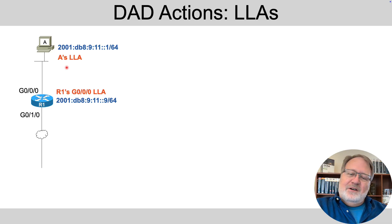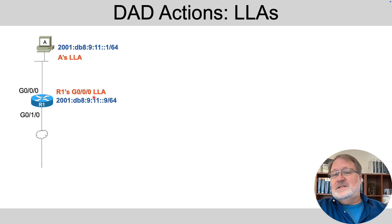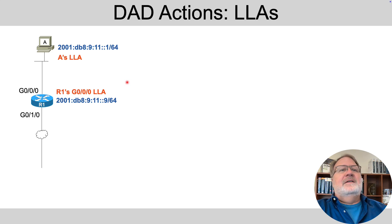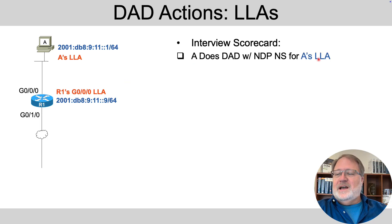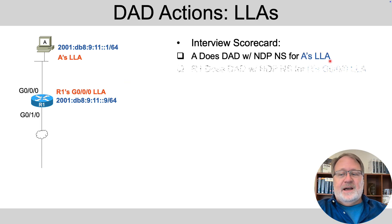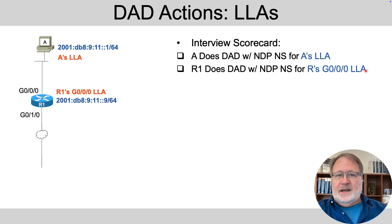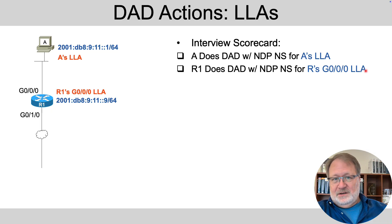In addition, remember the link local addresses? Those are unicast addresses that need to be unique on that link. So those devices will also use DAD on those — A will do DAD on its LLA, and R1 will do duplicate address detection on its LLA. That's an additional point I would be listening for from the interviewee.